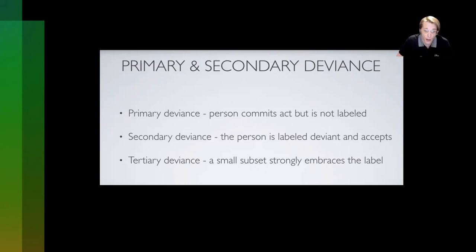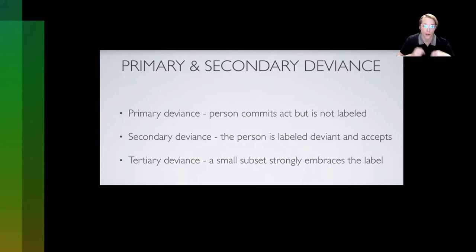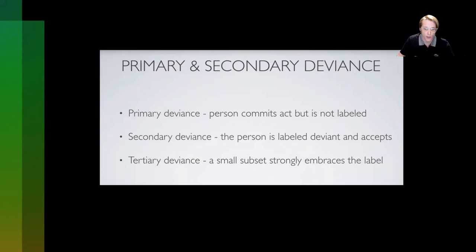To avoid negative consequences of deviant labels, people use techniques to normalize their behavior — to provide normalcy by explaining and excusing their actions. This takes many forms: justifications, excuses, and disclaimers are used. Sykes and Matza discuss five techniques used to rationalize deviant behavior.